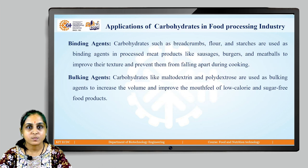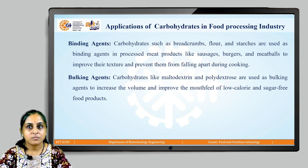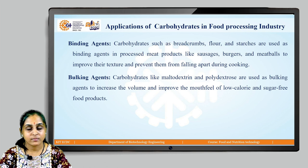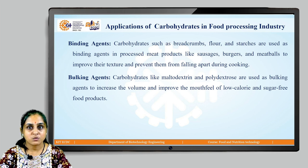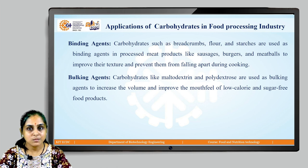Carbohydrates can be used as binding agents and bulking agents. For example, the starches present in food substances are used as binding agents in food products like sausages, burgers, and meatballs, in order to prevent them from falling apart during cooking. Carbohydrates like maltodextrin and polydextrose are used as bulking agents to increase the volume and improve the mouthfeel.